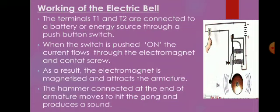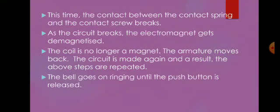The terminals T1 and T2 are connected to a battery or energy source through a push button and switch. When the switch is pushed on, the current flows through the electromagnet and the contact screw; the electromagnet is magnetized and attracts the armature. The hammer moves and strikes the gong, producing a sound. At this point the contact between the contact spring and the contact screw breaks, the circuit breaks, and the electromagnet gets demagnetized. The armature moves back, the circuit is made again, and the above steps repeat. The bell goes on ringing until the push button is released.